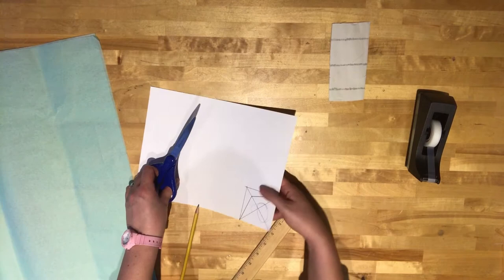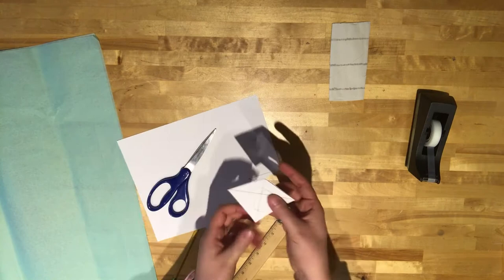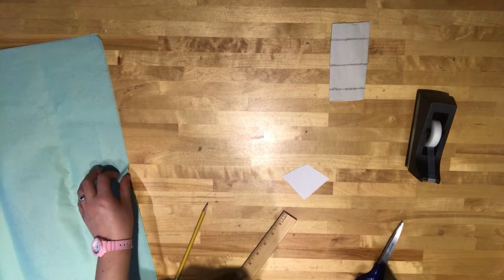So now I'll take my scissors. You can see I'm going to cut along this line and then along this line here. And this is the shape of my kite.